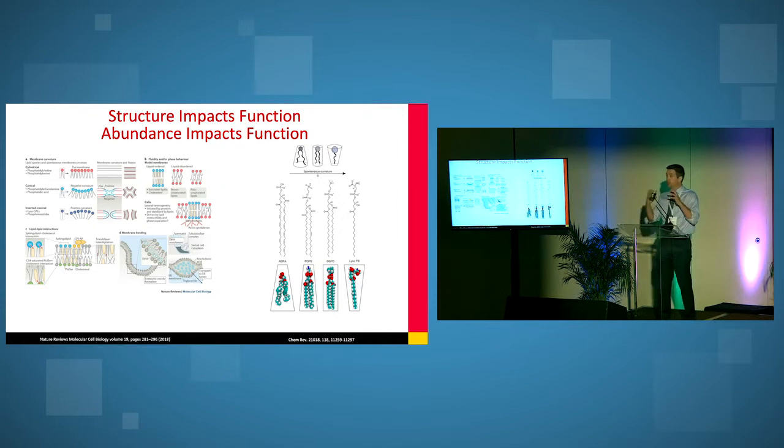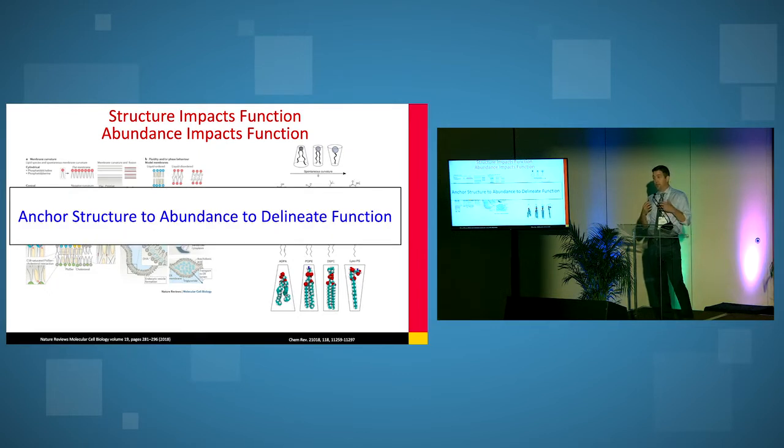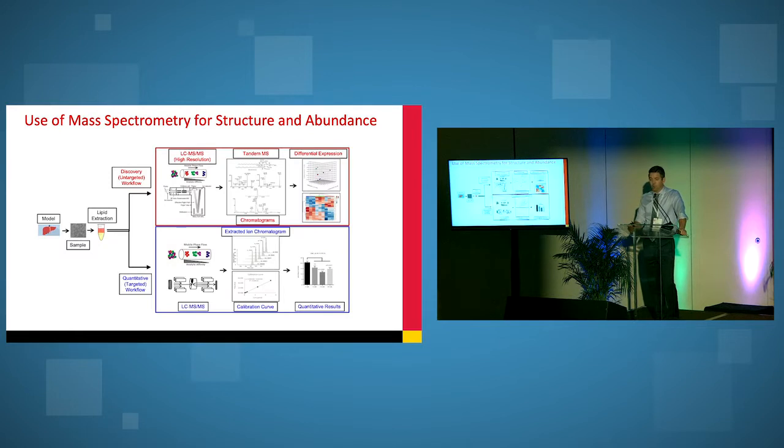And this figure here just highlights the role of lipid structure and how lipid structure, by changing the phospho, in terms of the plasma membrane, how the head group can affect plasma membrane fluidity and dynamics, but also the acyl chain, the acyl chain length and the degree of saturation highlights some of the structural impacts. And I would further say that not only are we interested in structure, but we're also interested in abundance as well. And so my group is interested in trying to define lipid structure, anchoring that structure to abundance, and then trying to translate that into biological activity or function.